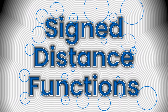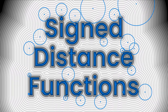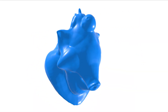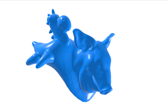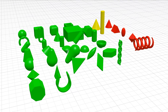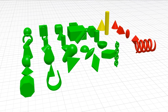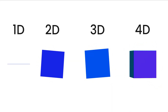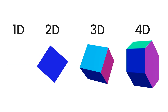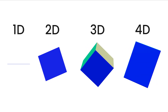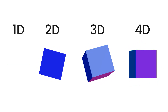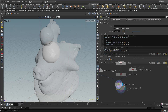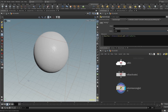I love signed distance functions. You can use them to blend between geometry in a smooth way. You can make all kinds of shapes just using math, and even work in higher dimensions — not just 3D but even 4D and so on. In this video I'll show you how to do all these things in Houdini.